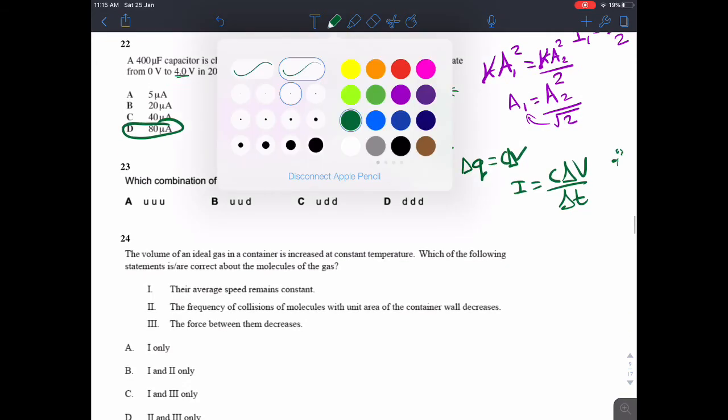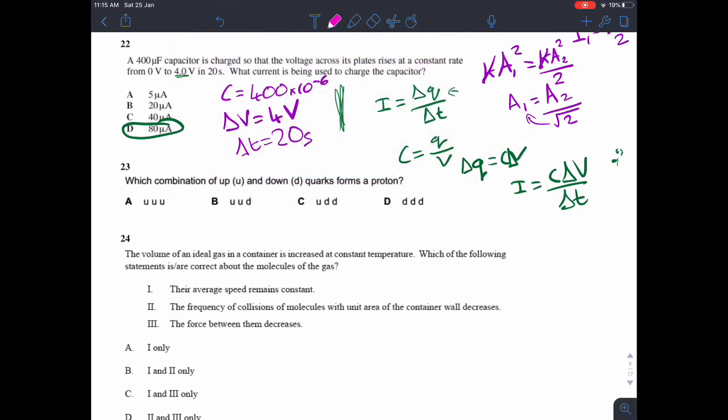Question 23. Which combination of up and down quarks forms a proton? This is just something that you need to remember. A proton is up, up, down. A neutron is up, down, down. Those are the two quark compositions that you need to remember. So the answer for 23 is B.